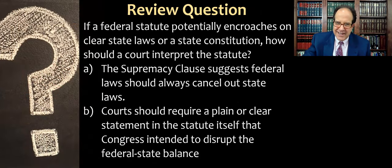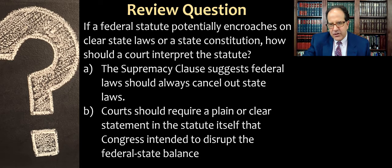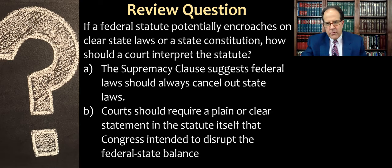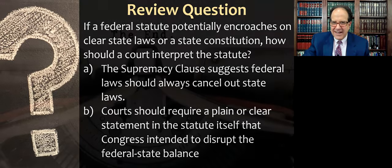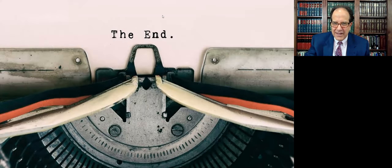Here's a review question: if a federal statute potentially encroaches on clear state laws or a state constitution, how should a court interpret the statute? A: the Supremacy Clause suggests that federal laws should always cancel out state laws. Or B: courts should require a plain or clear statement in the statute itself that Congress intended to disrupt the federal-state balance. Hopefully you know the answer — this was supposed to be an easy question. And that concludes our discussion about Gregory v. Ashcroft.